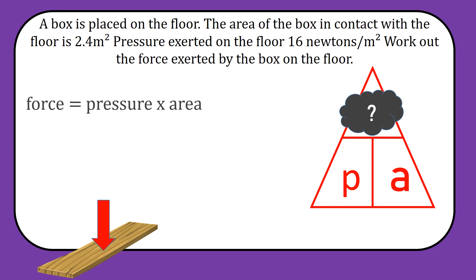We're told the pressure is 16 newtons per metre squared. We're told the area of the box in contact with the floor is 2.4 metres squared. So we can substitute those values in, which gives us an answer of 38.4 newtons.